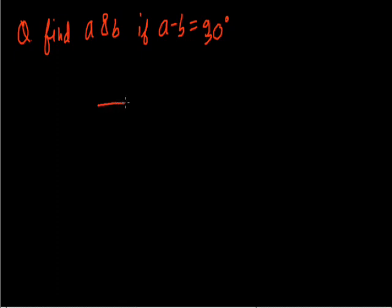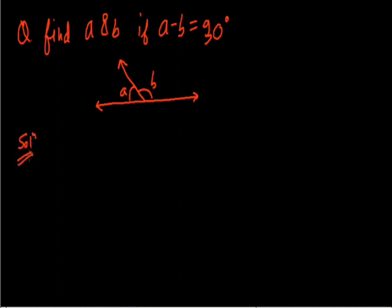The figure shows a straight line. This angle is B and this angle is A. Now we have to find the values of A and B. Because this is a straight line, A and B are forming a linear pair, and the sum of a linear pair of angles is always 180 degrees. So we can say that A plus B equals 180 degrees.